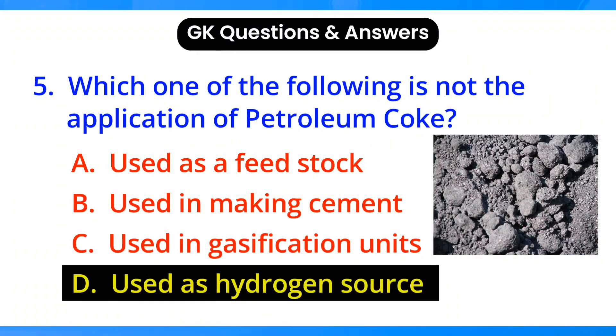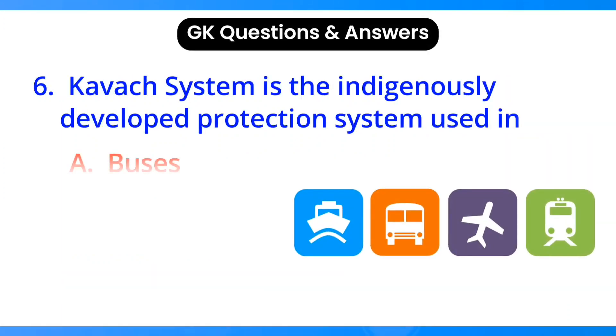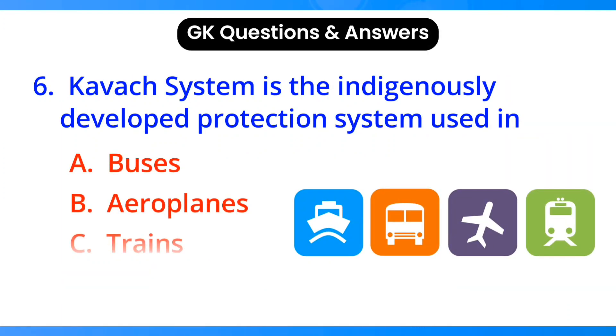Which one of the following is not an application of petroleum coke? Answer: option D, used as a hydrogen source.